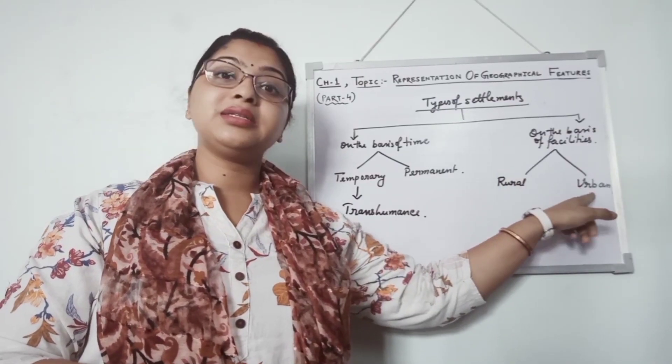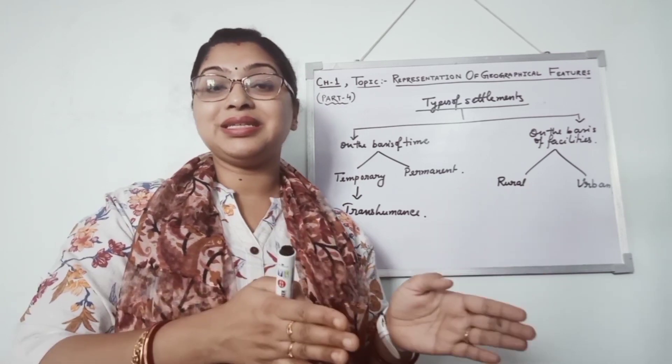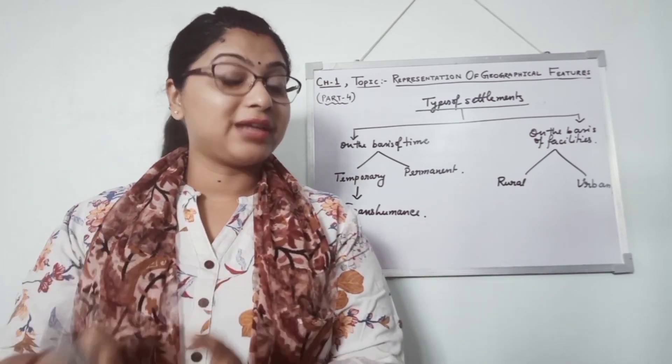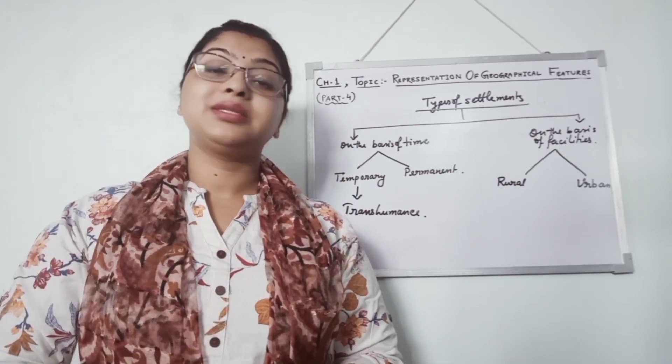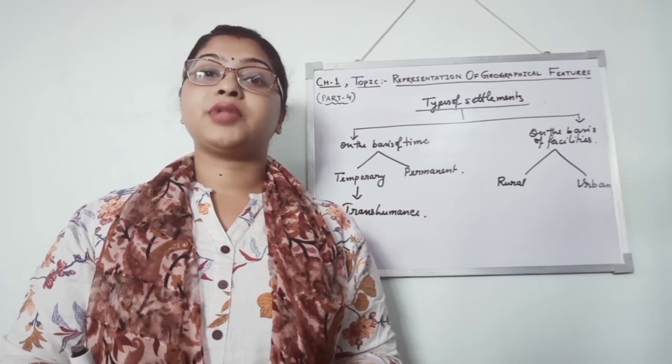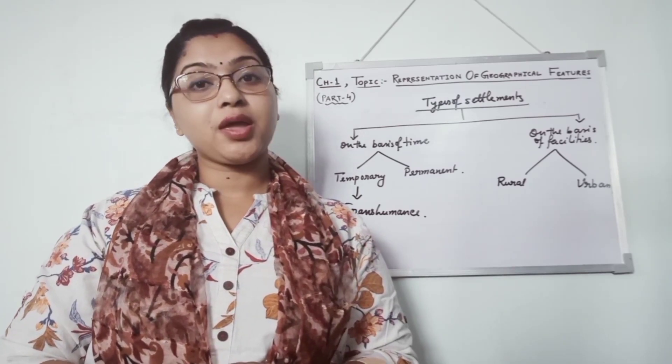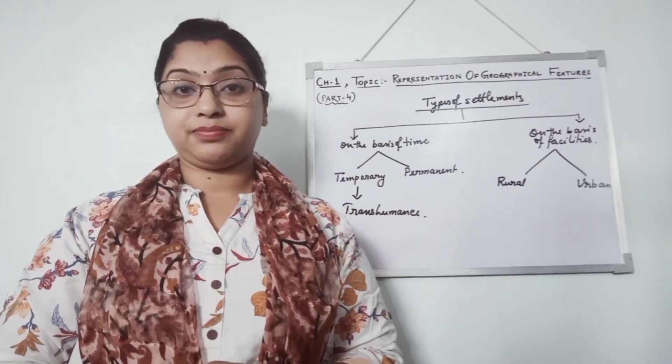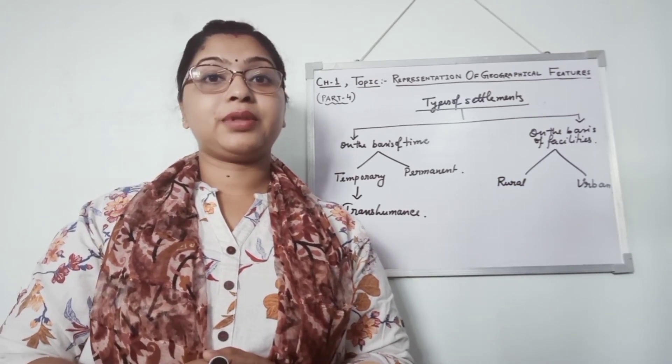And on the other hand, urban settlements. These are basically cities and the towns. These are known as urban settlements. Urban settlements are having all the facilities. People maximum engage in the manufacturing and trade and commerce sector. They enjoy the modern life.